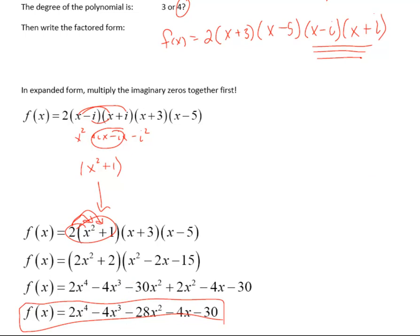This polynomial has four zeros, right? Look, degree 4. And we know that one of them is negative 3. One of them is 5. And the other two are both imaginary.